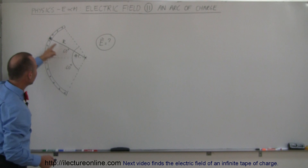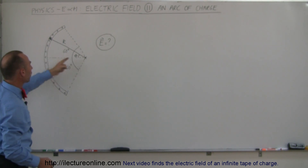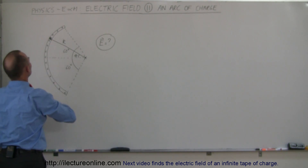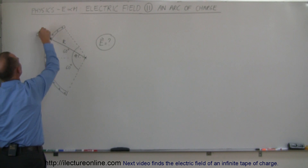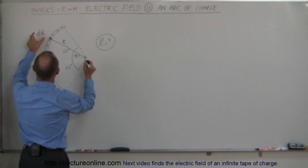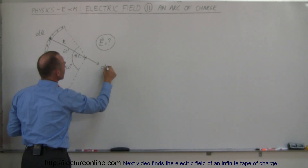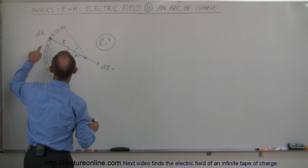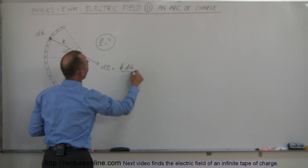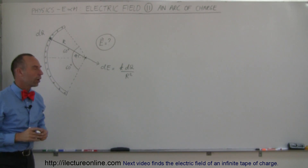The radius is R, so the charge always resides exactly the distance R away from the point we're interested in. Let's take a small segment and call that a small amount of DQ. The electric field at this location caused by DQ is a small amount of DE, and that DE is equal to K times DQ divided by R squared, R being the radius of that circular arc.